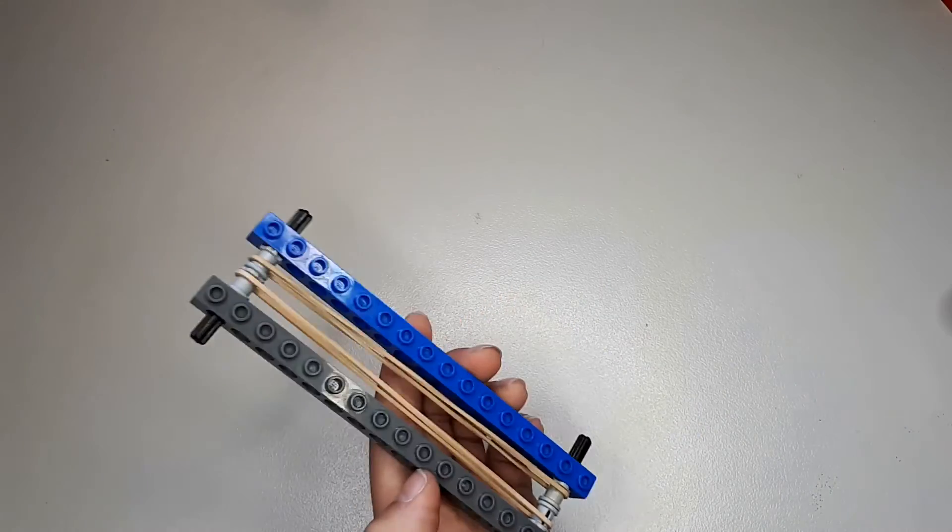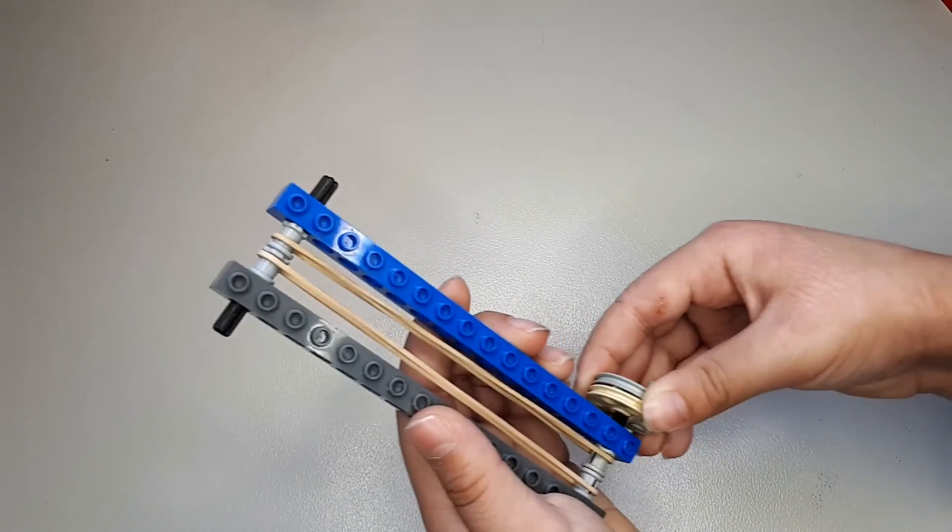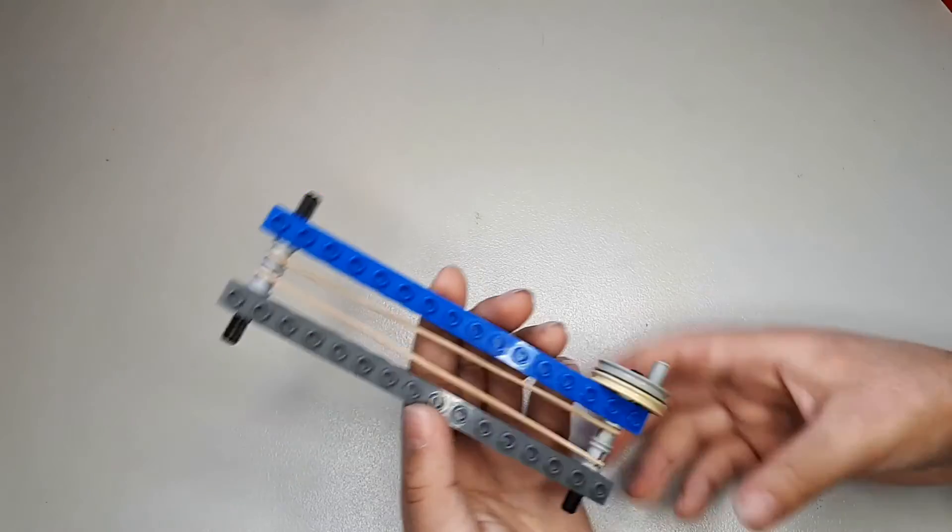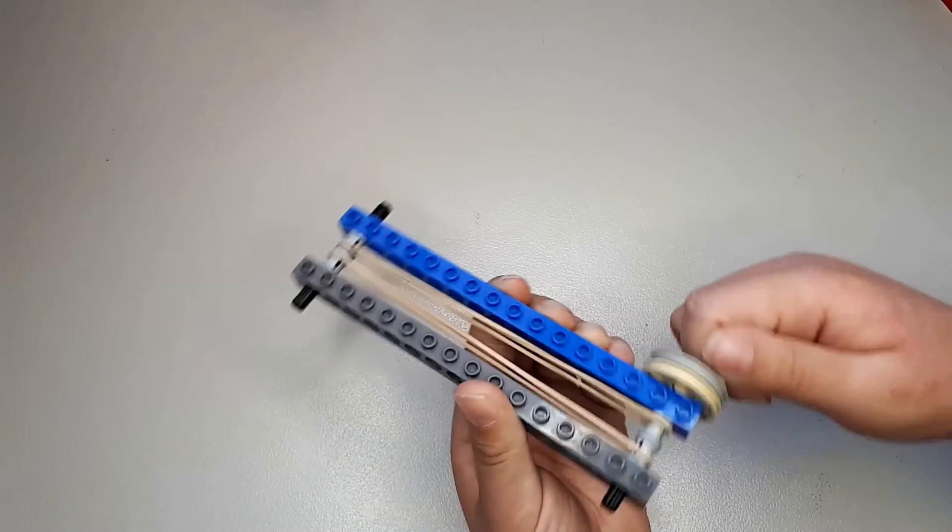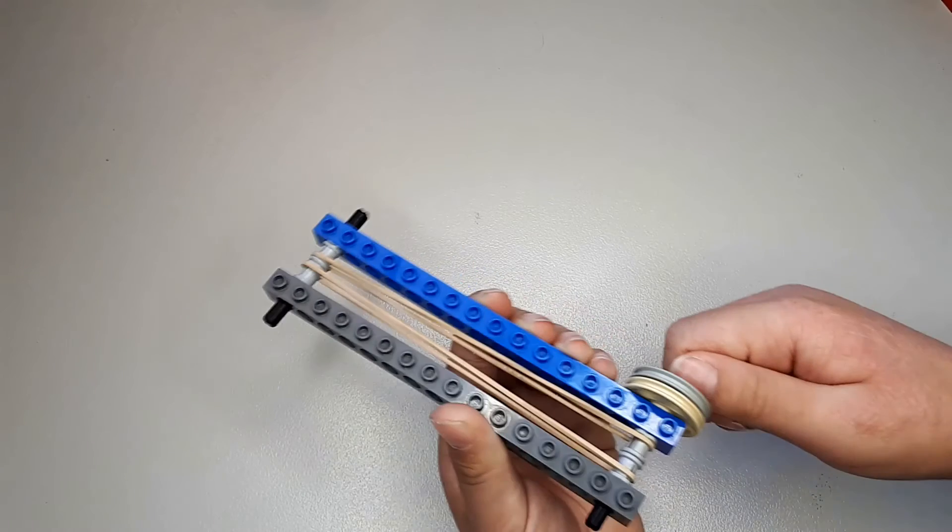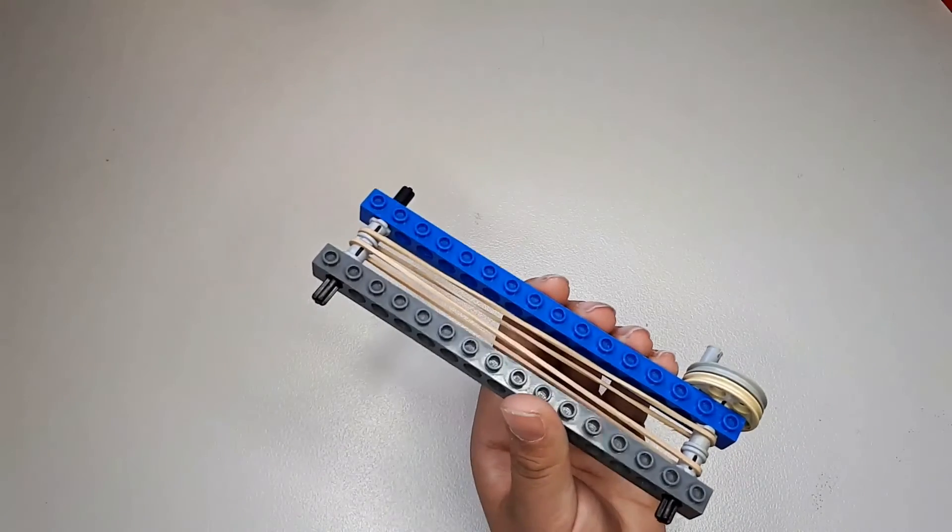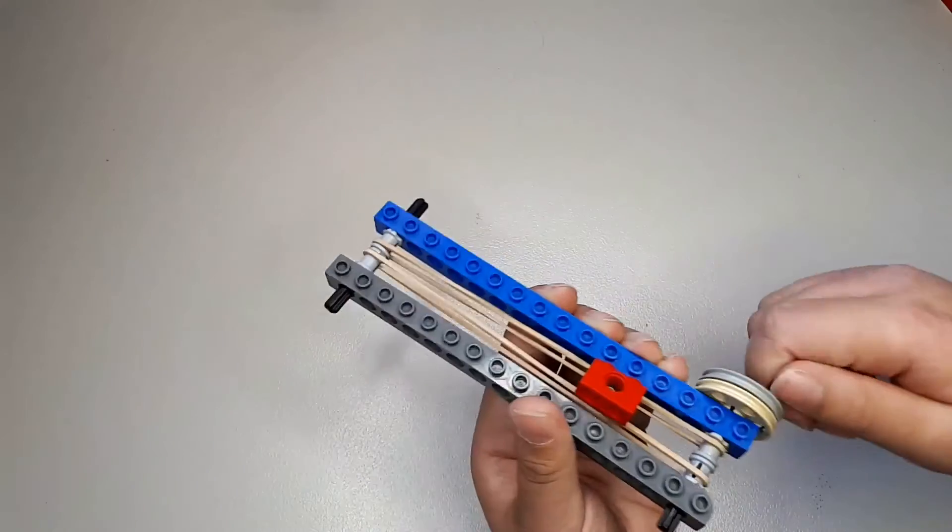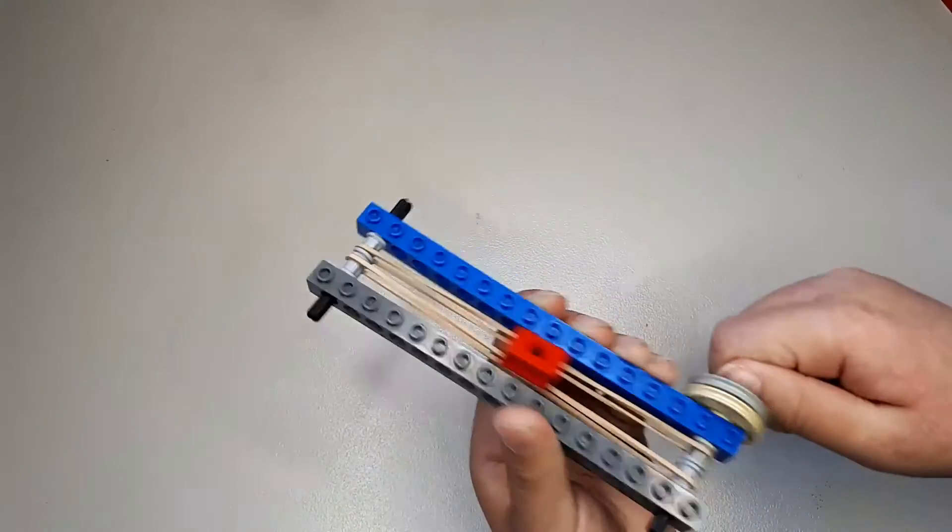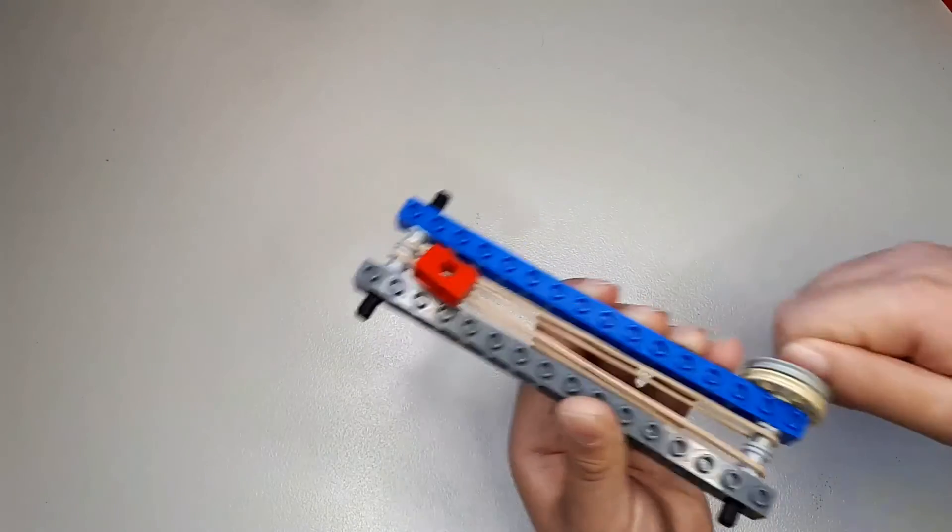Grab your conveyor belt and put the two pulleys in there. Now you've got a working crank on your conveyor belt. Let's test it out. I like how now we've got a handle to get the conveyor belt working.